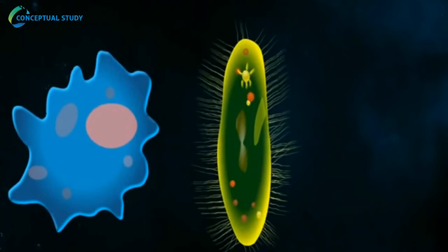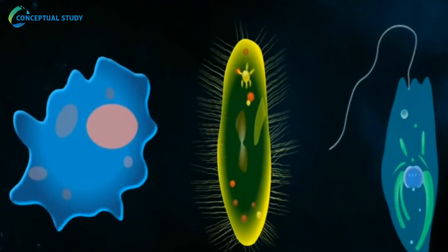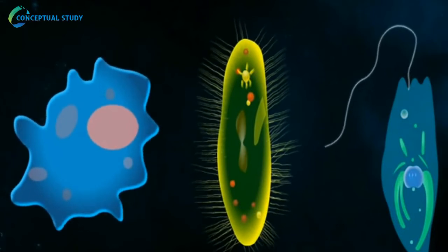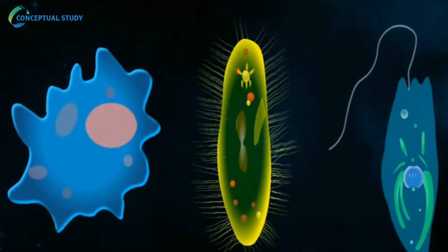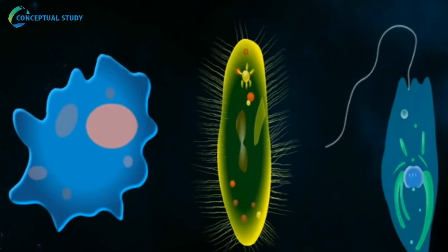In some lower animals, reproduction occurs mainly by asexual means. It is a type of reproduction in which there is no formation and fusion of gametes. In this type of reproduction, a single parent can produce its identical and exact copies.